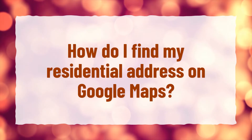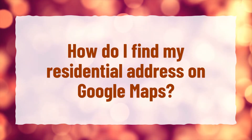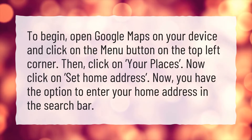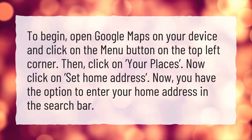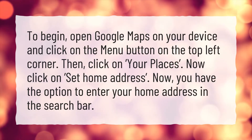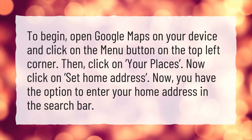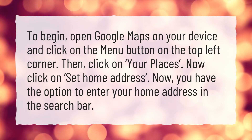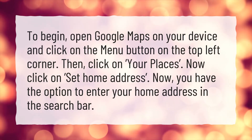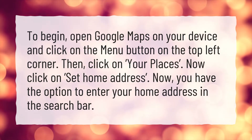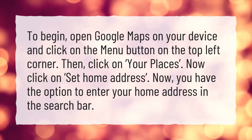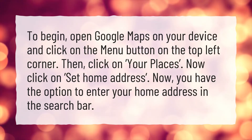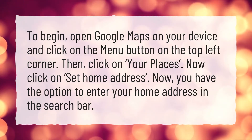How do I find my residential address on Google Maps? To begin, open Google Maps on your device and click on the menu button on the top left corner. Then click on Your Places. Now click on Set Home Address. You have the option to enter your home address in the search bar.